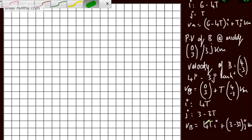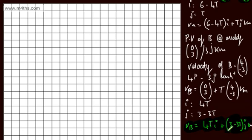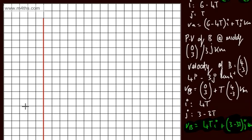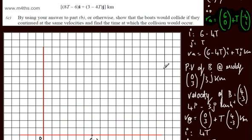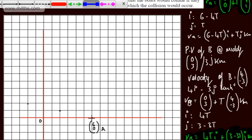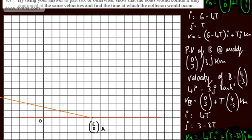All we're doing is considering where we started plus velocity multiplied by time. Let's now see this physically on a coordinate axis. Starting with boat A: it begins at position (6, 0) — 6 km east — and has velocity (−4, 1), meaning every hour it goes left 4 and up 1. So at midday it's here, after 1 hour here, after 2 hours here — following that path corresponding to r equals r₀ plus vt.